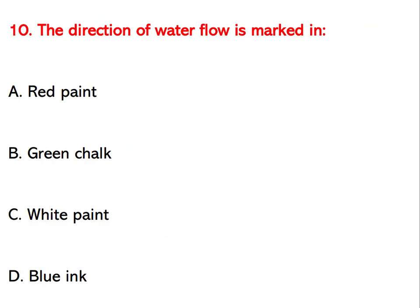The direction of water flow is marked using which medium? Options are red paint, green chalk, white paint, or blue ink. The right answer is white paint.